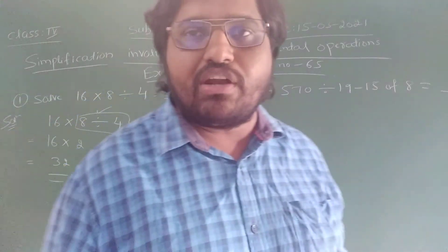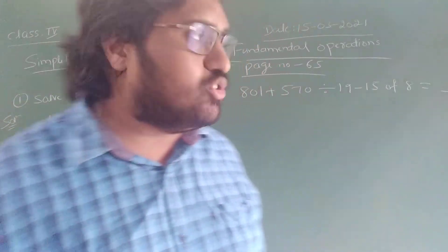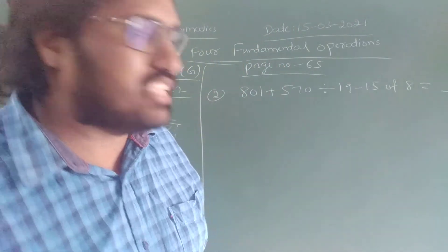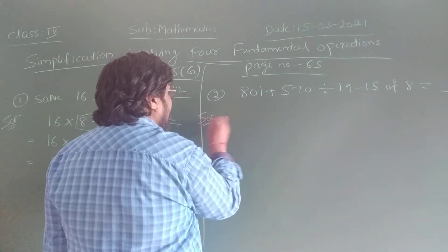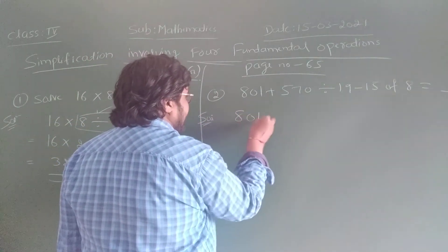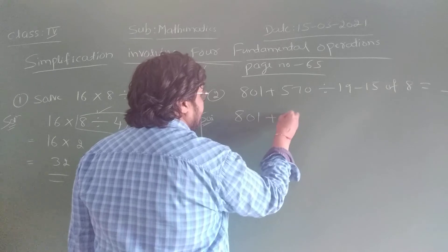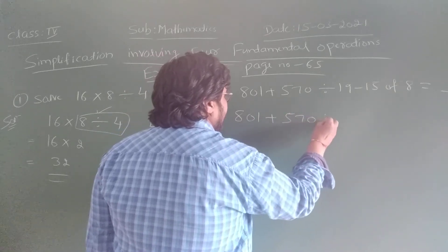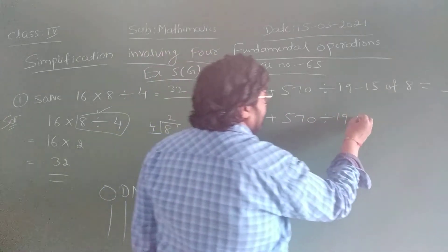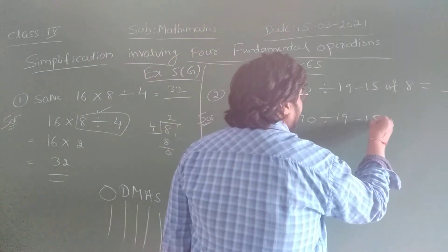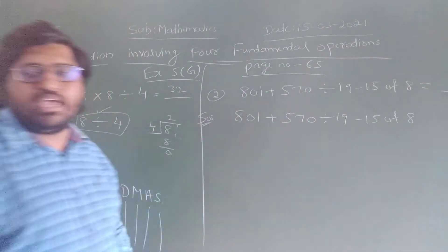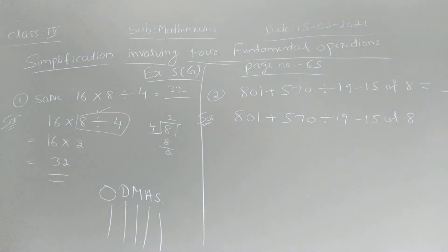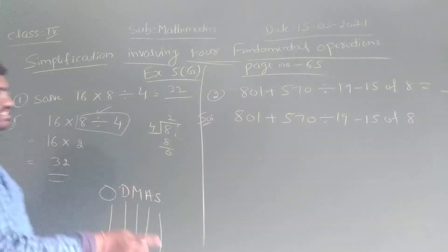So it is simple, children. Let us look at one more example — question 3. I am going to write the question: 801 plus 570 divided by 19 minus 50 of 8. Now according to the rule, first O is there.